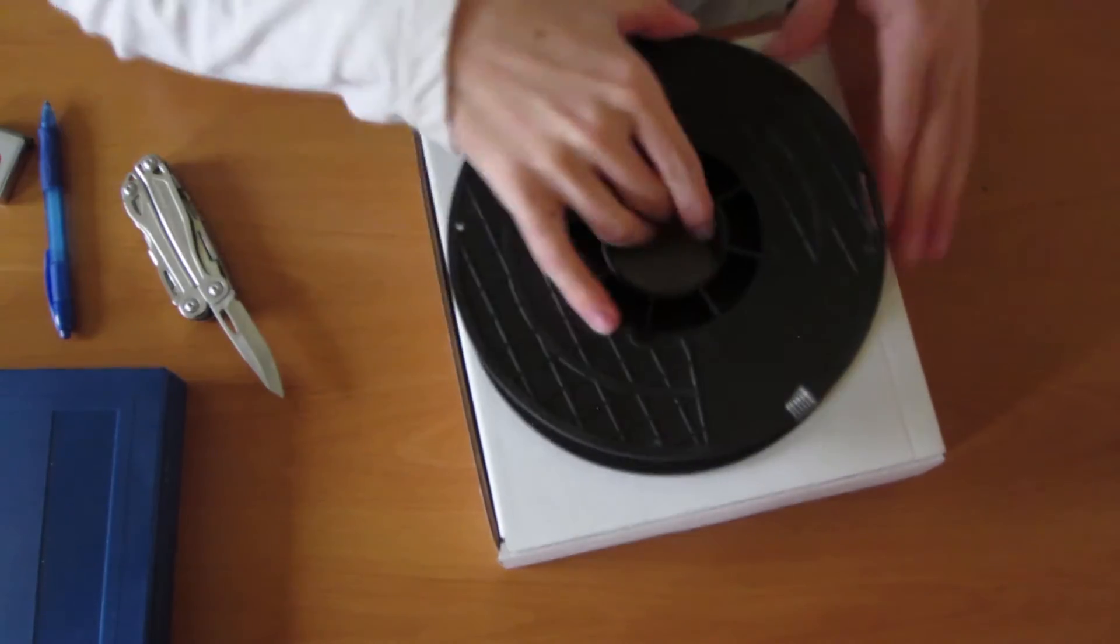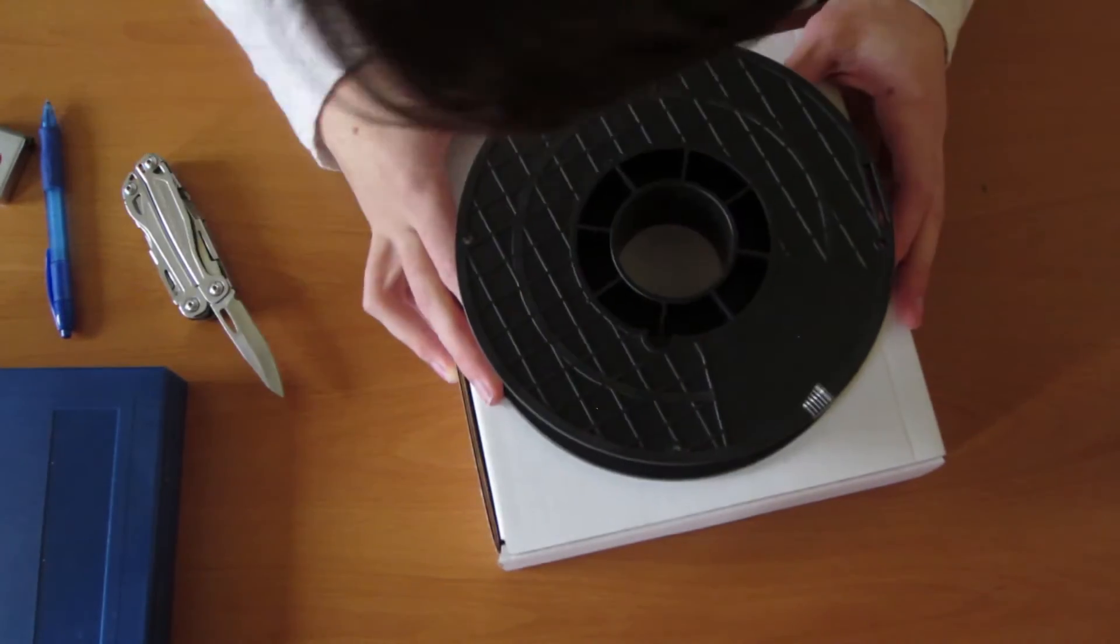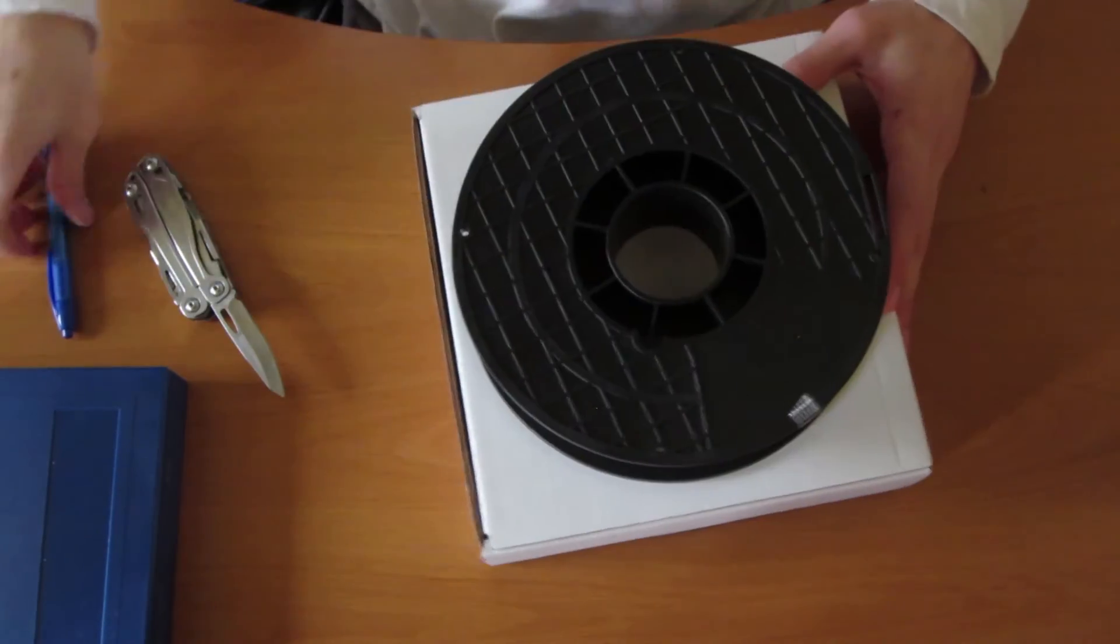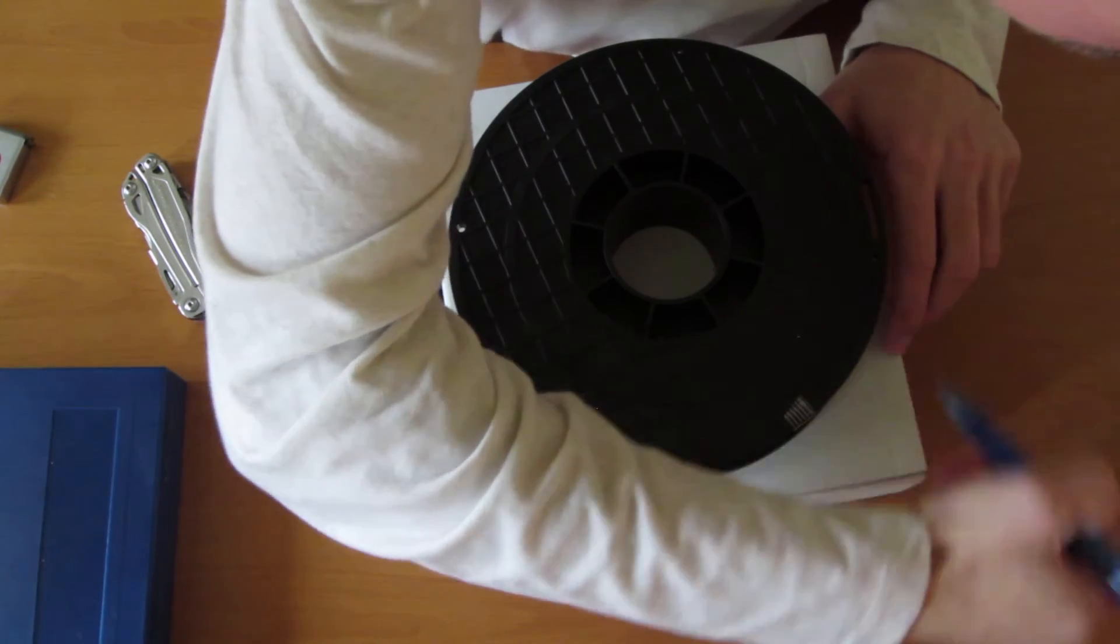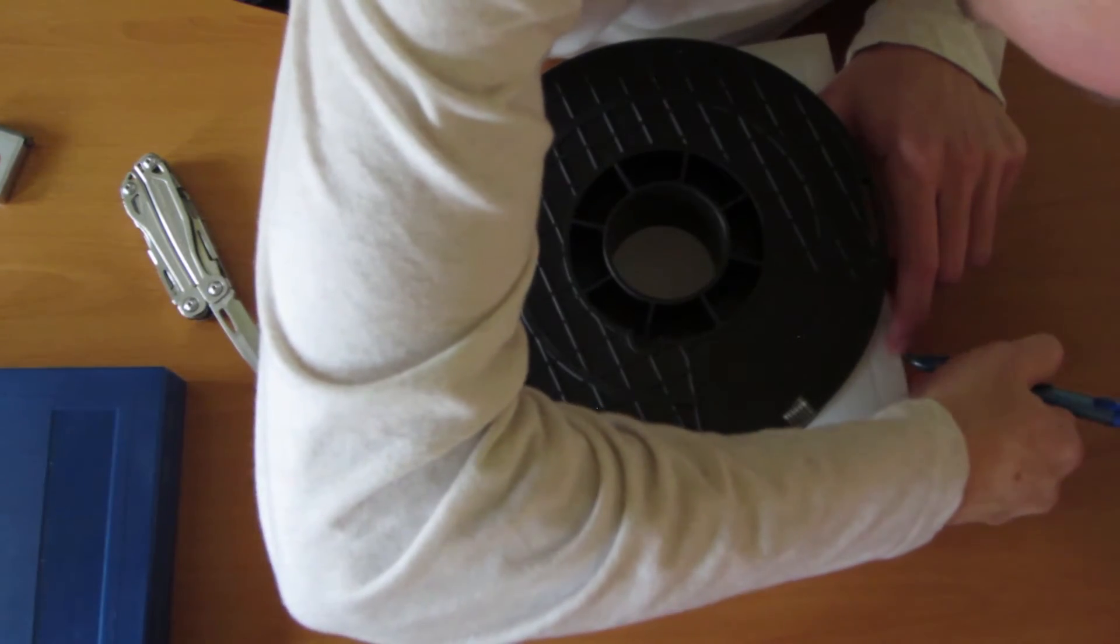And then we're going to make a line and figure out where the hole where it comes out should be. So just line it up on the center of the box, see approximately where the filament is and then make a little marker on the side of the box. Once you do that, flip it on its side, grab a ruler.